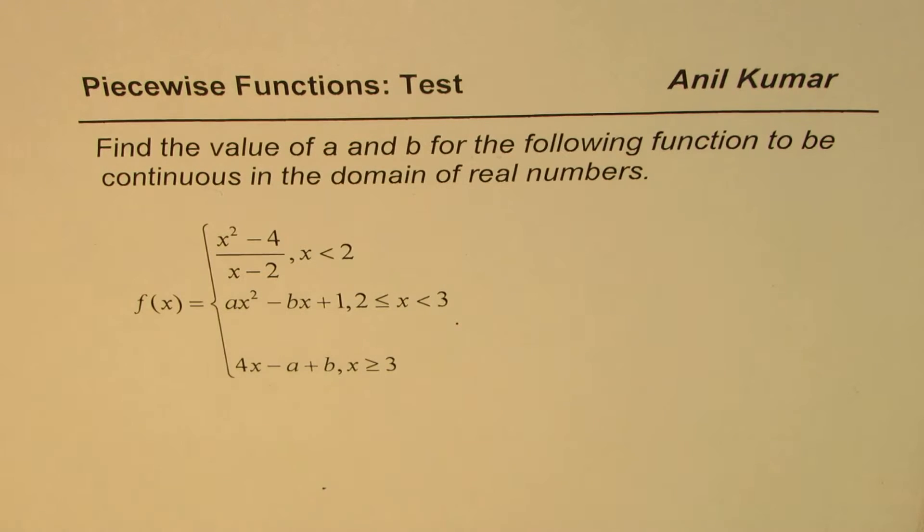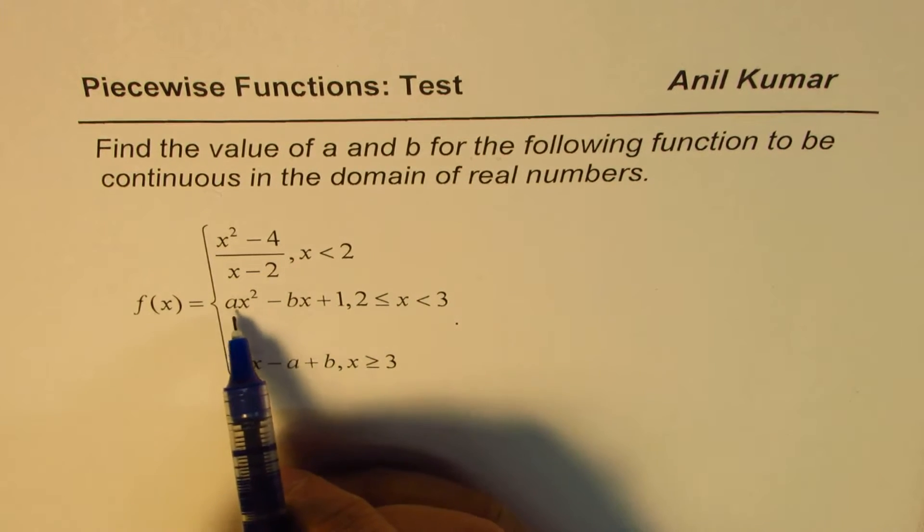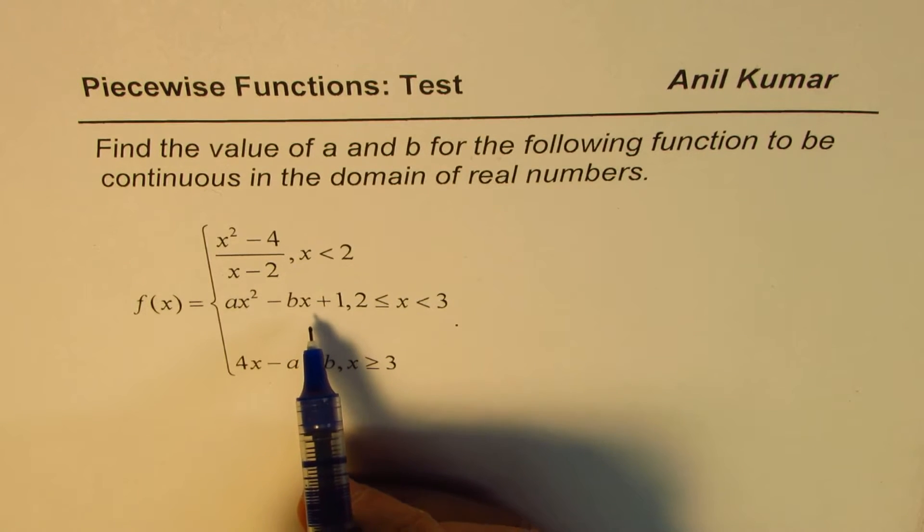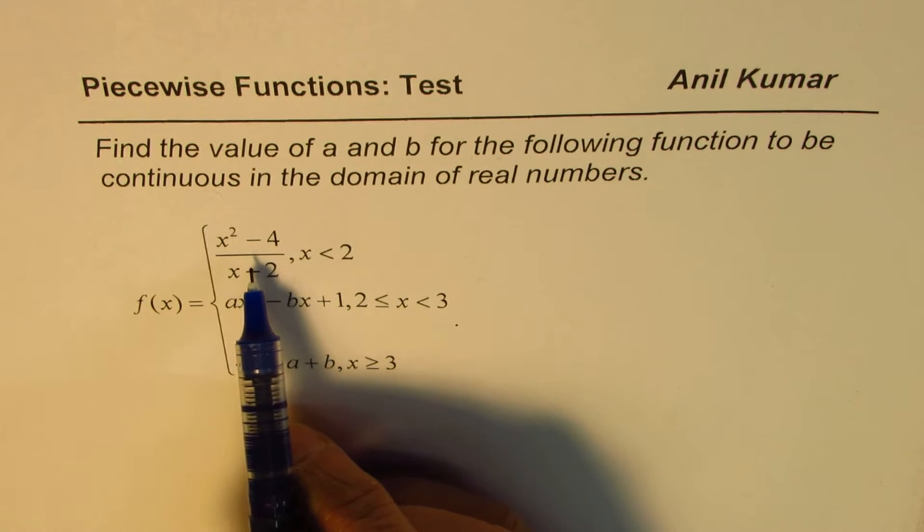Now basically, what we need to do is we have two variables a and b, we need to get two equations. Once we have two equations, we can actually solve for a and b. Now let's begin from the very first one.